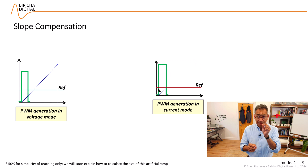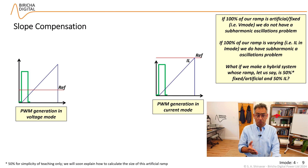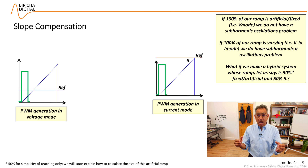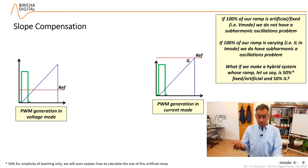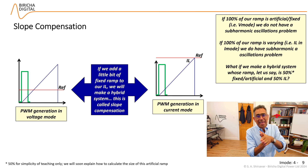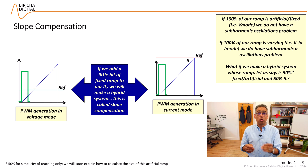The way to fix it is to look at the PWM section. With 100% artificial ramp as in voltage mode, there are no subharmonic oscillations. With 100% varying ramp as in peak current mode, we do get subharmonic oscillations. So what if we create a hybrid system with, say, 50% artificial ramp and 50% time-varying ramp? This is exactly what we do — we take a little bit of voltage mode's fixed ramp and add it into the varying ramp of current mode. This increases the slope of our ramp, which is why it is called slope compensation.